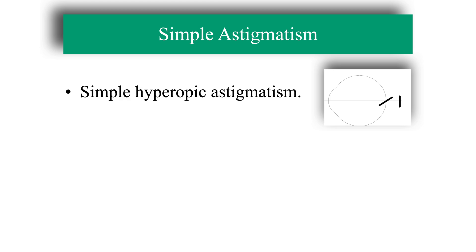In simple hyperopic astigmatism, the retina is in the first focal plane. The emmetropic vertical meridian and the image of a point is a horizontal line. The horizontal meridian is hyperopic and the rays refracted by this meridian are focused behind the retina.